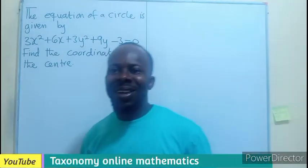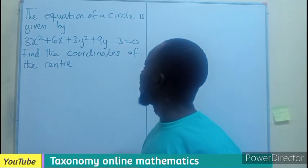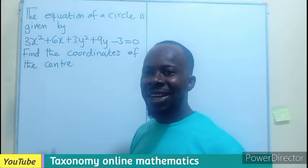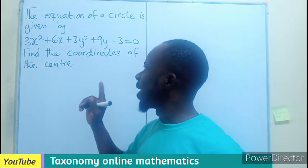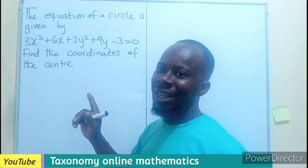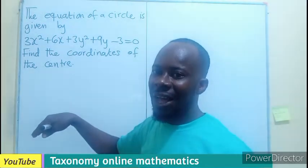Hello, welcome. Let's solve this question under coordinate geometry. The equation of a circle is given by 3x² + 6x + 3y² + 9y - 3 = 0. We have to find the coordinates of the center.